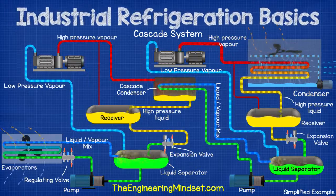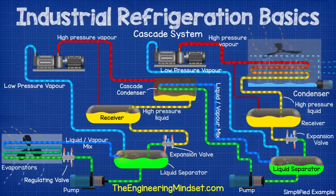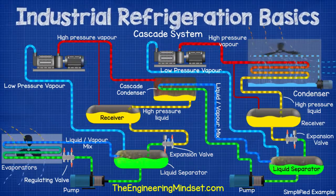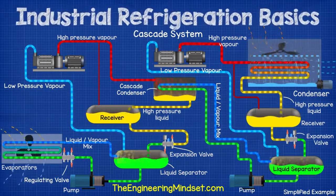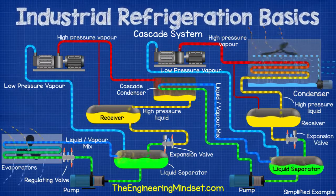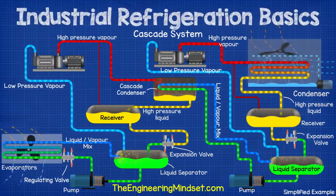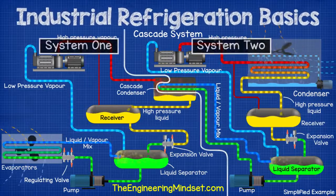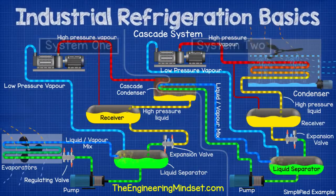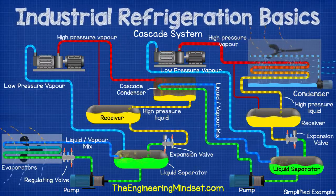It is a little daunting when you first look at this system, but if you've watched this video all the way through without skipping, then you should be able to follow how it works. Just give yourself a moment to trace the pipes and see where everything is flowing. These refrigeration systems usually consist of two or more separate refrigeration circuits, often using different refrigerants to provide a cooling effect. In this system, we have two compressors, except they are both circulating refrigerant around separated circuits — a high temperature circuit and a low temperature circuit.